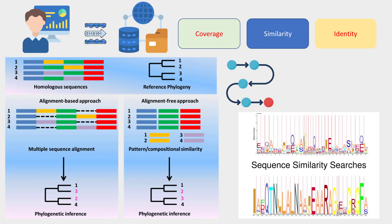In a nutshell, sequence alignment helps to identify regions of resemblance in DNA, RNA, or protein resulting from functional, structural, or evolutionary relationships between the sequences.